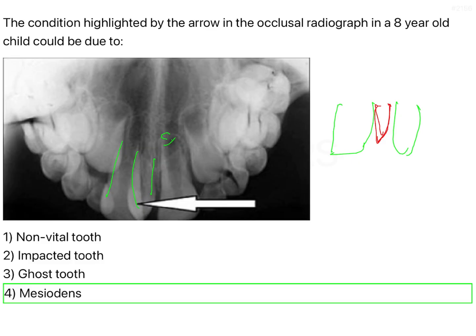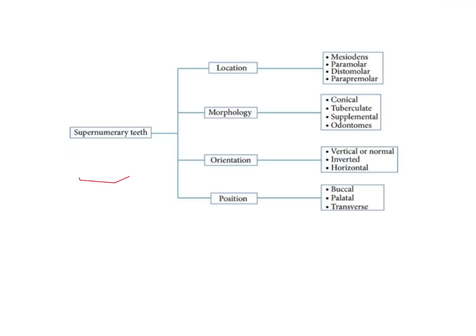The mesiodense is nothing but a supernumerary tooth which is conical in shape. Supernumerary teeth can be broadly classified based on morphology and based on their location. A mesiodense is classified based on its location, whereas based on its morphology, it is conical in shape. On location, you have: mesiodense — in the midline; paramolar — right next to a molar; distomolar — behind the third molars; and parapremolar — next to your premolars.